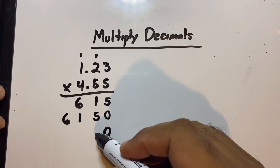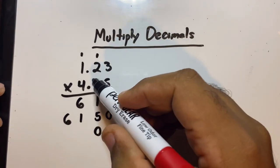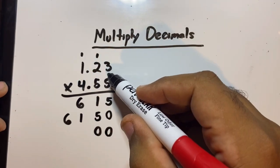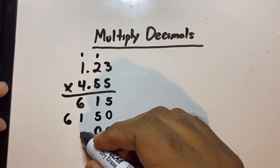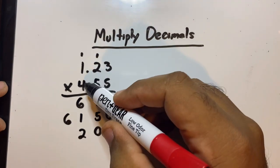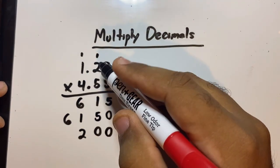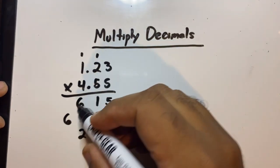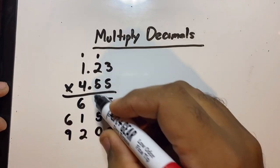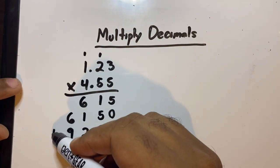We're done with these two fives, so we'll put a zero here and a zero here. Now we'll work on the four. Four times three is 12, carry the one. Four times two is eight, plus the one is nine. And then four times one is four.